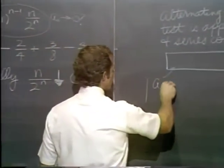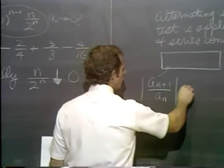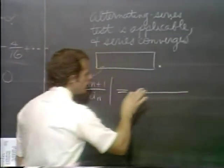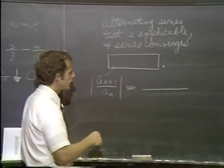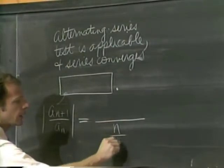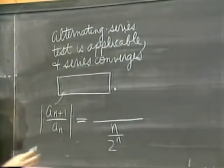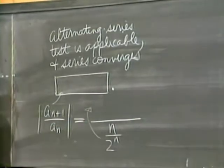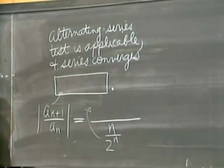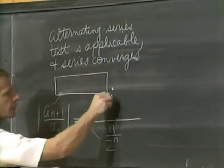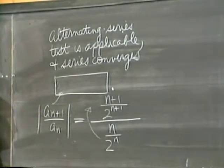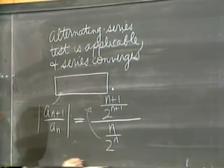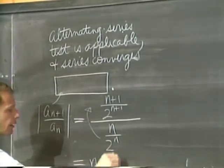If you take the n plus first term over the nth term, in absolute value, you'll get, let's see what it looks like. Immediately, I throw away the alternating signs. What we started out with was n over 2 to the n. Be careful. Everywhere you see an n, replace it literally with n plus 1. This will be n plus 1 on top, 2 to the n plus 1 on the bottom in the numerator. Now, when you flip things over and cancel, you'll get n plus 1 over n and 1 half.